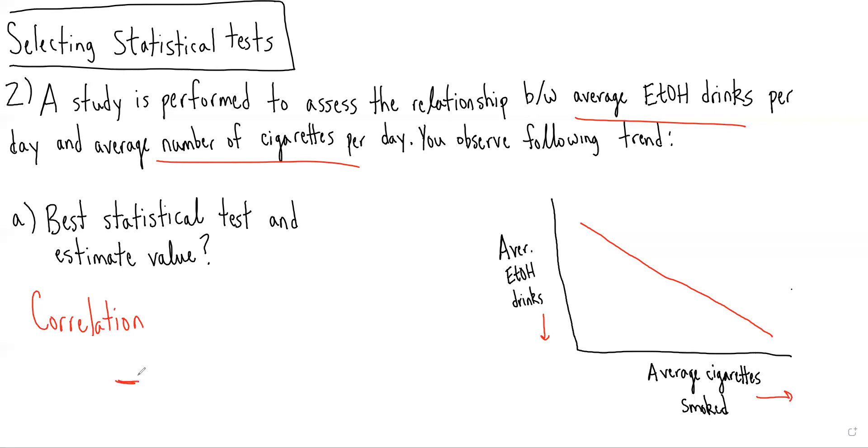And because we see there's such a strong correlation, as cigarettes go up, undoubtedly, number of alcoholic drinks per day is going to go down. There's a very strong relationship between the two. This would be represented by a negative one correlation coefficient.